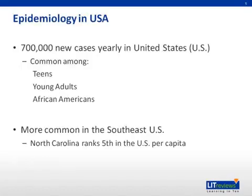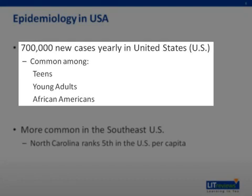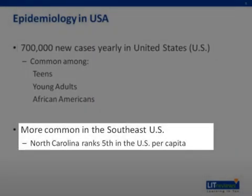Starting off with epidemiology, there are about 700,000 new cases of gonorrhea reported in the United States each year. It is most common among teens, young adults, and African Americans. Regionally, gonorrhea infection is very prevalent in the southeast United States, which makes it of particular concern here at Duke.